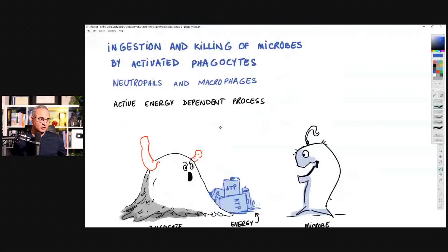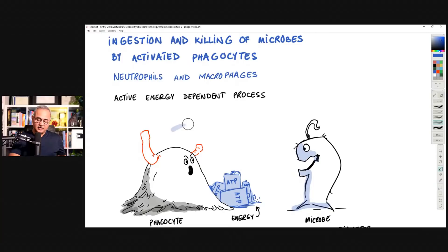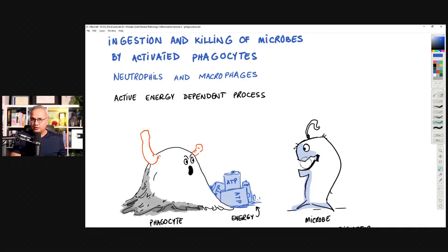Continuing from yesterday — imagine we have a pathogen present in a tissue and here is a cell, it may be a neutrophil, a dendritic cell, or a macrophage — a phagocytic cell. This cell has a job: first to sense the pathogen, as we discussed yesterday, and then today we'll study that it has to pick up this pathogen, eat it up, and destroy it.